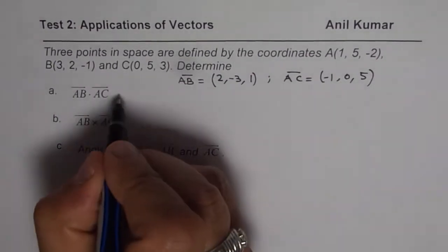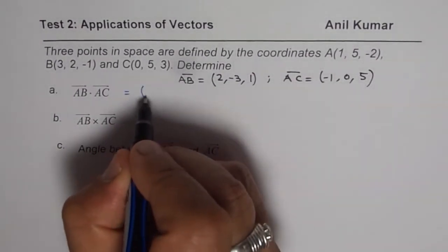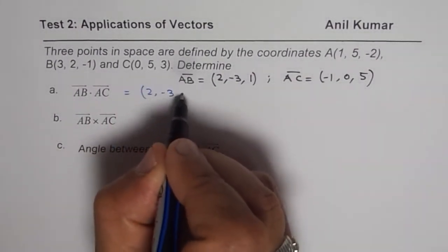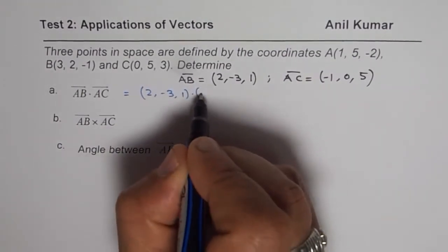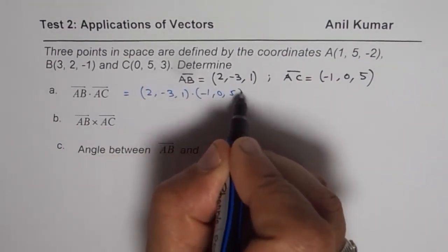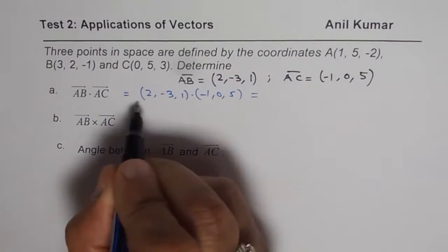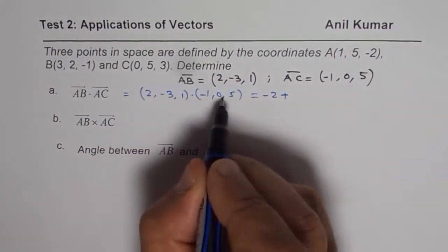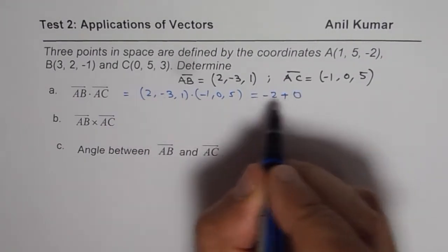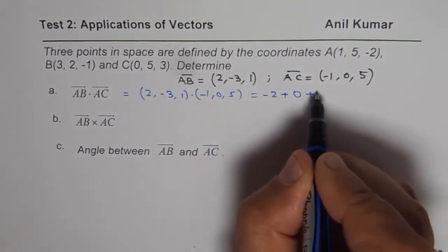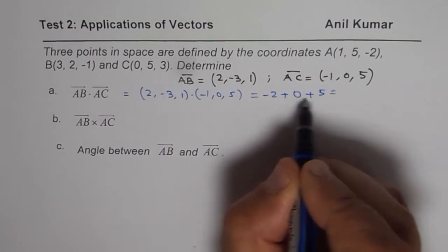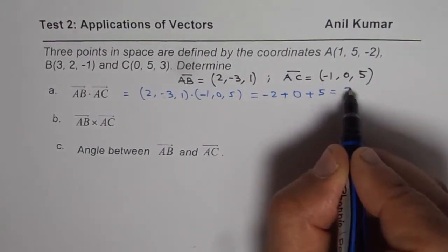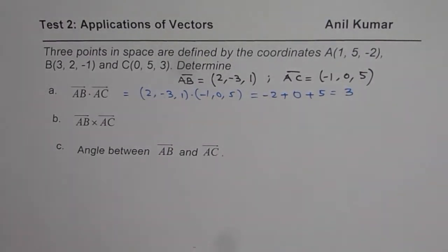So dot product will be equal to (2, -3, 1) dot (-1, 0, 5). So you multiply the corresponding, 2 times -1 is -2, plus -3 times 0 is 0, plus 5 times 1, which is 5, and when you add -2 to 5, you get 3. So dot product is always a scalar, a magnitude of 3.